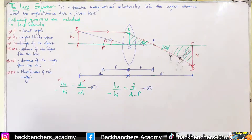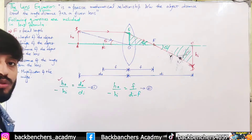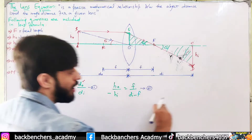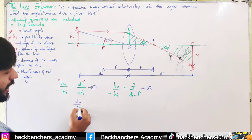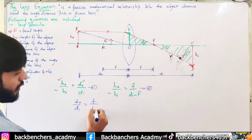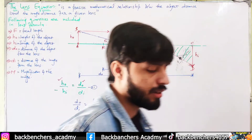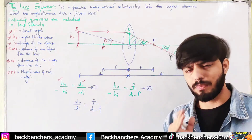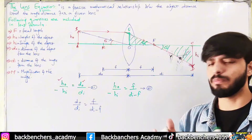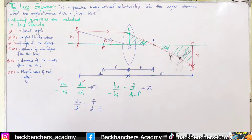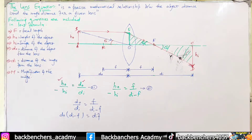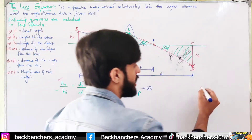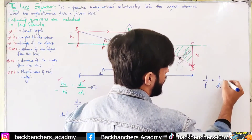Now we can easily compare equation one and equation two, since both express h_o/h_i. Comparing them: d_o divided by d_i equals f divided by (d_i minus f). There are many methods to derive the final equation from here. What I will do is simply cross-multiply: d_o times (d_i minus f) equals f times d_i. The main equation we want to arrive at is: 1/f = 1/d_i + 1/d_o. Let's derive this step by step.